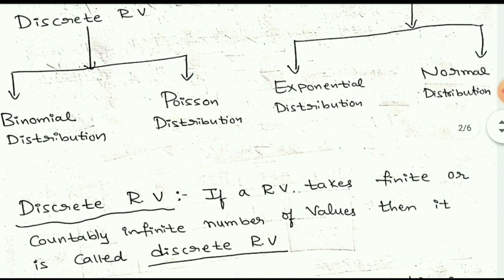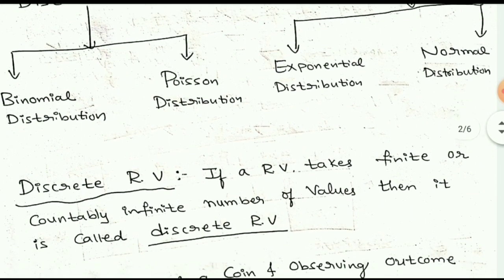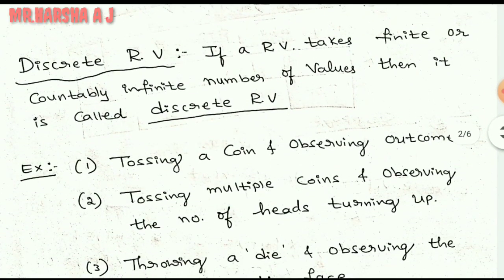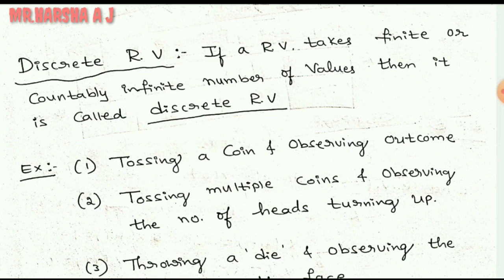Let us continue. First we will start with discrete random variable. The definition: if a random variable takes a finite or countably infinite number of values, then it is called a discrete random variable. Simply put, if a random variable takes discrete values, then it represents a discrete random variable. For example, tossing a coin and observing the outcome is an example of discrete.